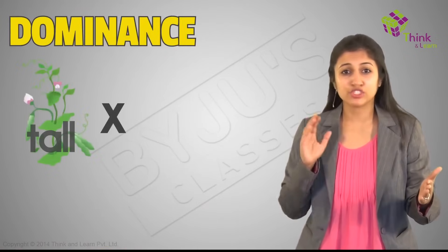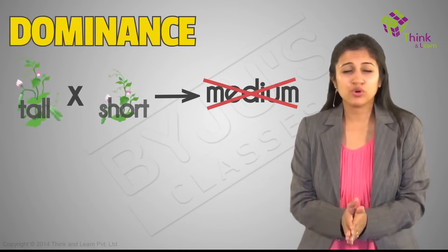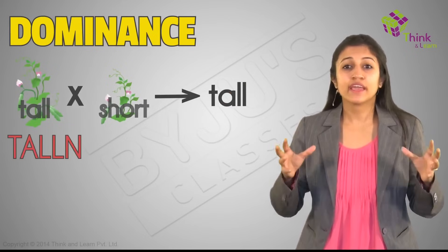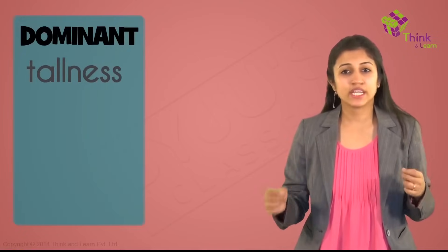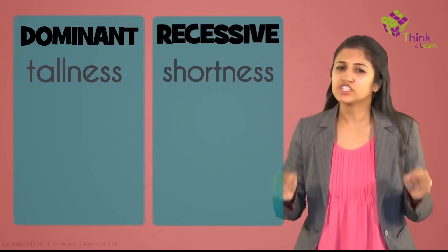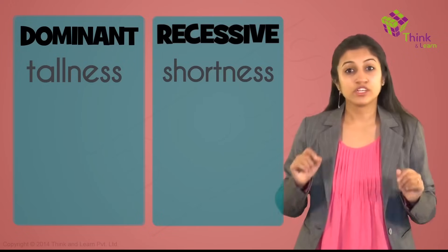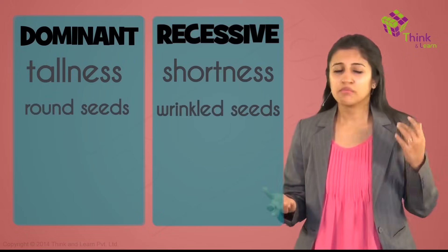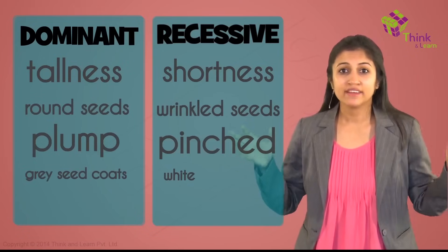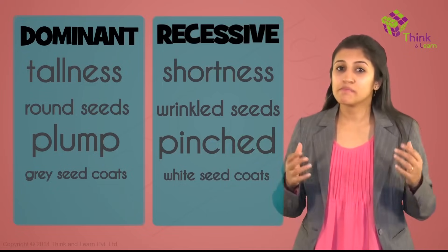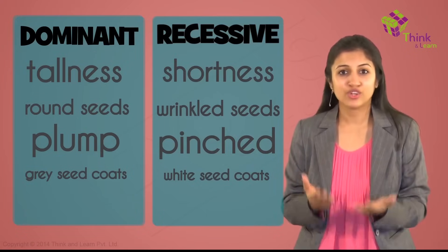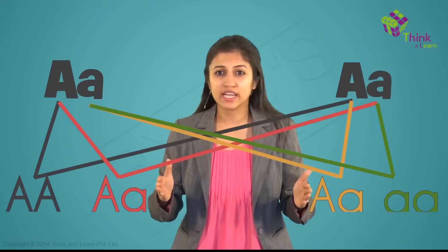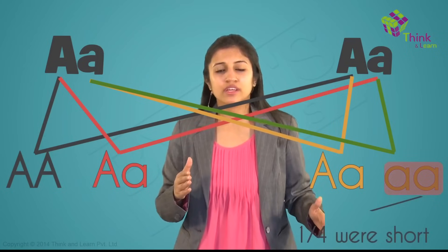His first big discovery was dominance. When he crossed a tall pea plant with a short one, one would expect medium-sized plants. But no — they were all tall. So he concluded that tallness is superior or dominant over shortness. The trait of tallness is dominant and the trait of shortness is recessive. In every single case, one trait was found to be dominant — round seeds are dominant over wrinkled ones, plump over pinched, gray seed coats over white. A tall-short hybrid was always tall.